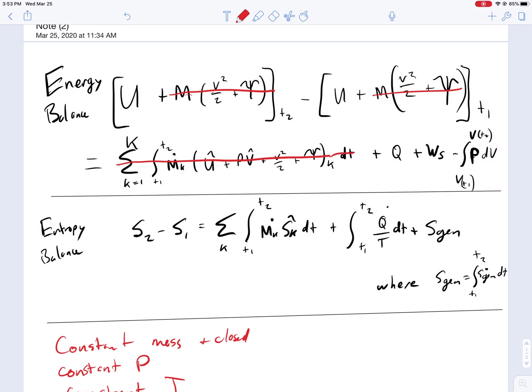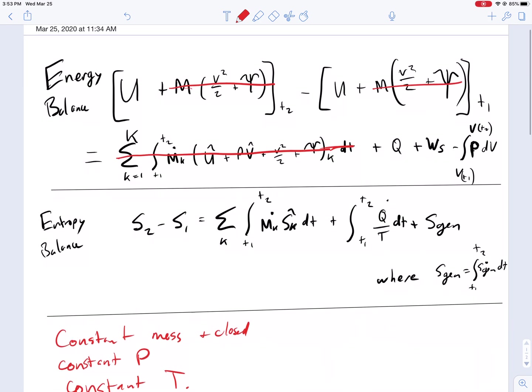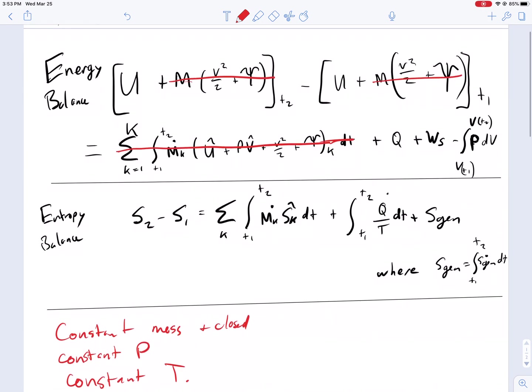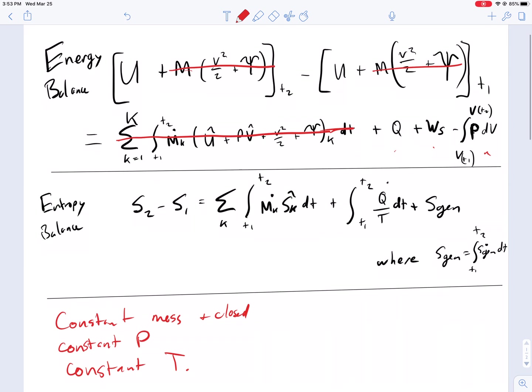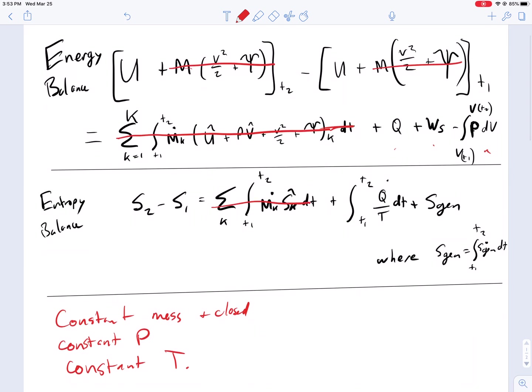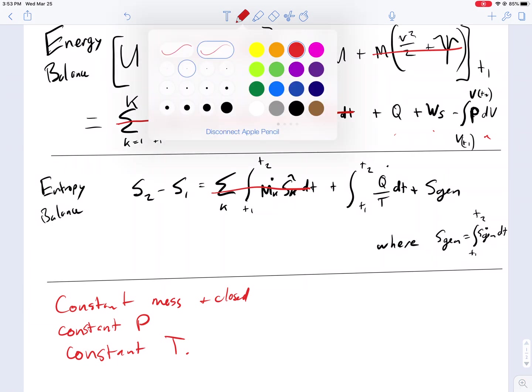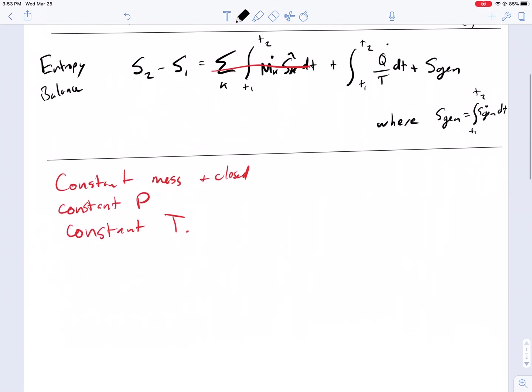All of these terms that have flow are now gone. And now what can we get rid of that's left here? Actually the Q and the WS and the pressure volume, none of our conditions right now will let us take any of those out. We can get rid of the flow terms on entropy as well, leading to a modified version of these two equations.